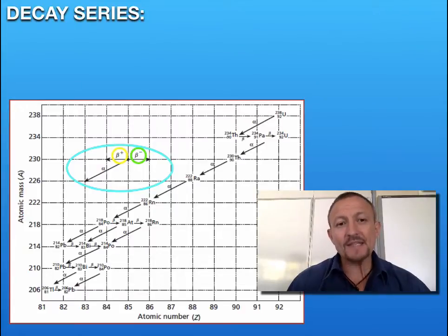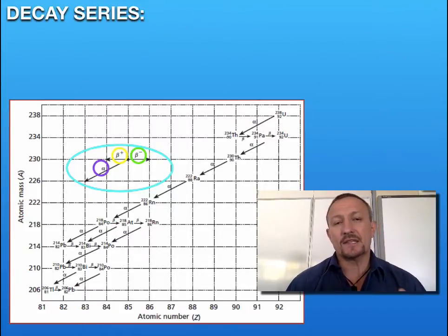We've also got an alpha particle, which is a helium nucleus. This is made up of two protons and two neutrons. There's no electrons, just two protons and two neutrons.